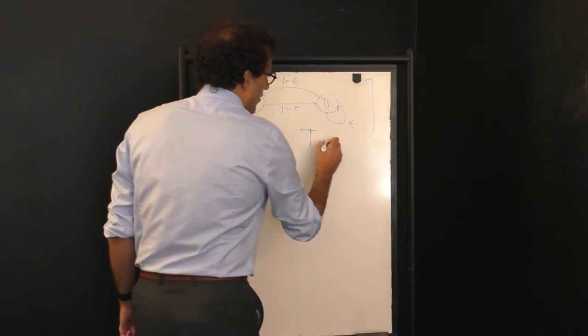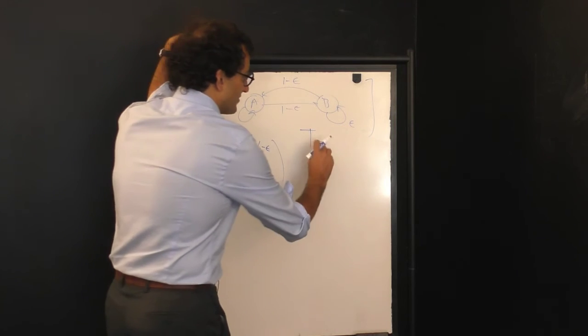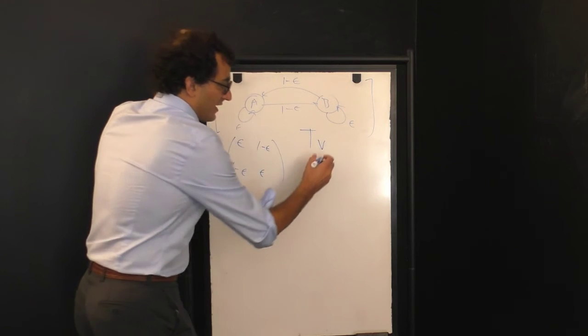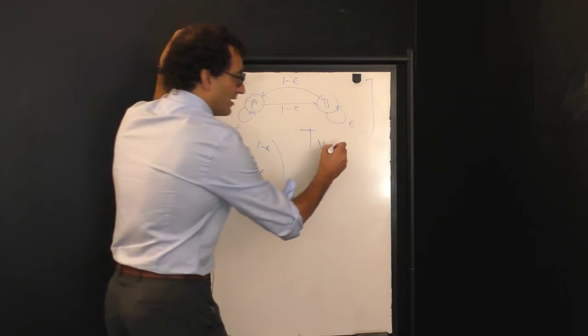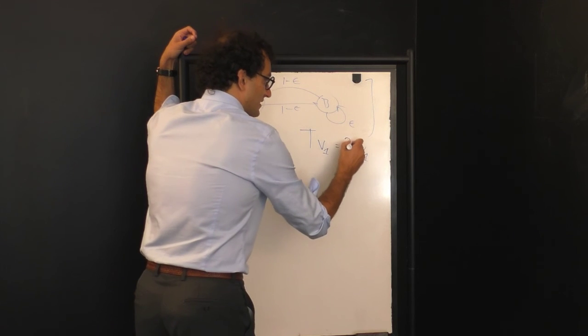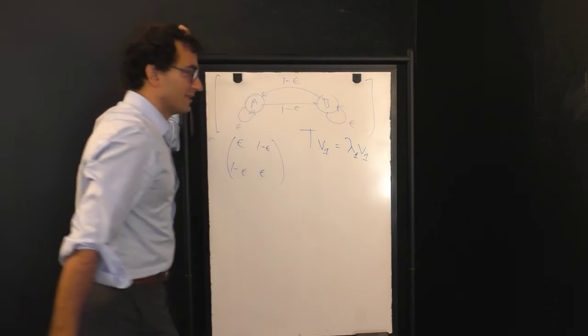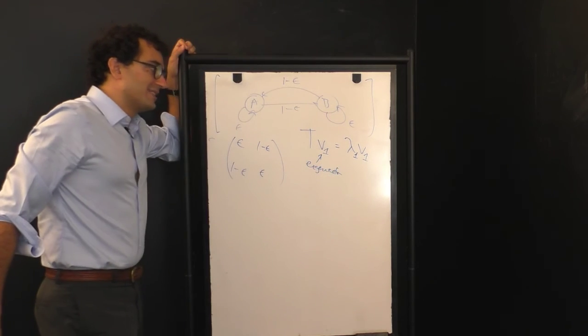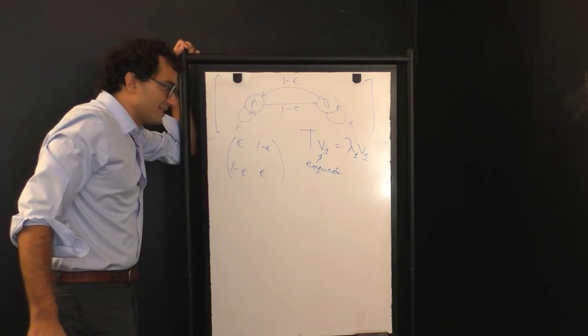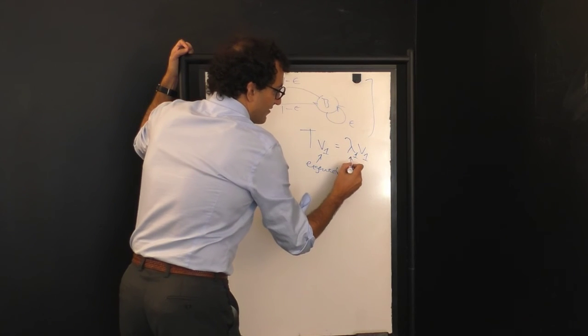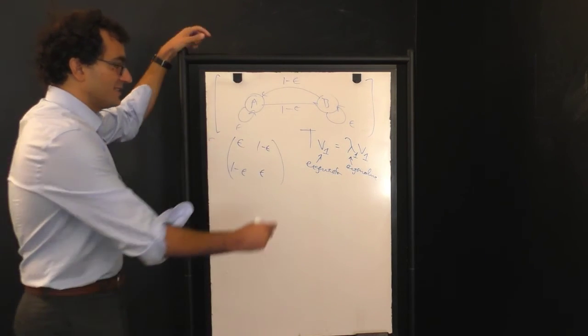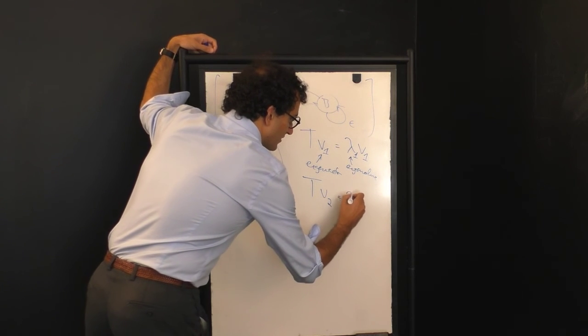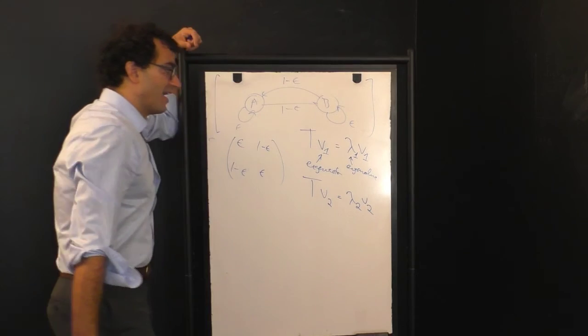If the matrix is T, what we're going to do is find its eigenvectors. The eigenvectors of the matrix T are defined by T acting on, let's say, the first eigenvector gives you back the first eigenvector potentially times some constant lambda. So this is the eigenvector of the transition matrix or the evolution operator T, and this is the eigenvalue.